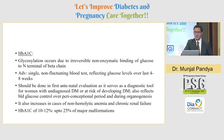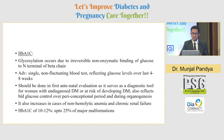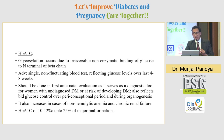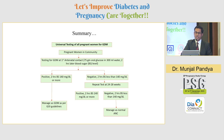Regarding HbA1c, in pregnancy it reflects glucose status of the past four to eight weeks, not three months. It should be done at the first antenatal evaluation as a diagnostic tool for undiagnosed or at-risk diabetes. When HbA1c is around 10 to 12%, there are approximately 25% chances of the fetus having major congenital malformations — that is why HbA1c is very important.